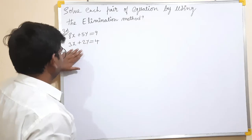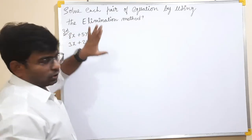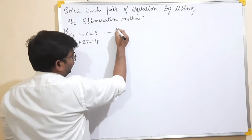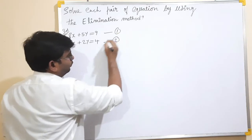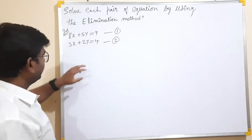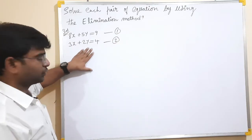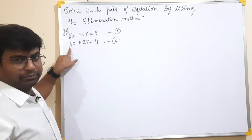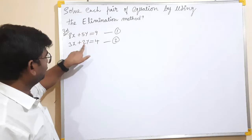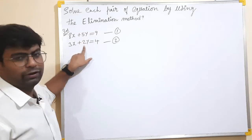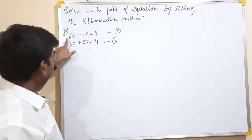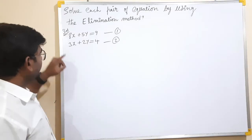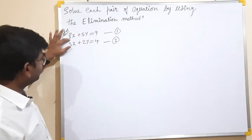So, the elimination method. We have two equations to solve — equation number 1 and equation number 2. The coefficients are different: this is 8 and 3 on one side, and 5 and 2 on the other. We have two equations that are similar in the x term — the coefficients are 3 and 8.